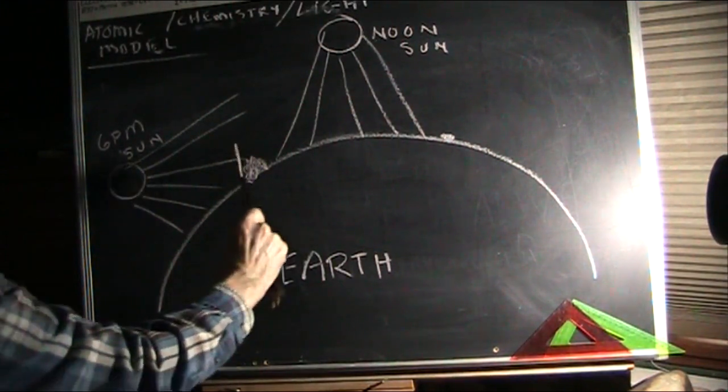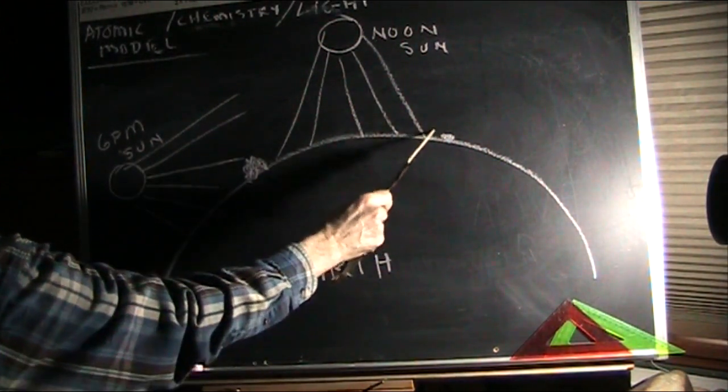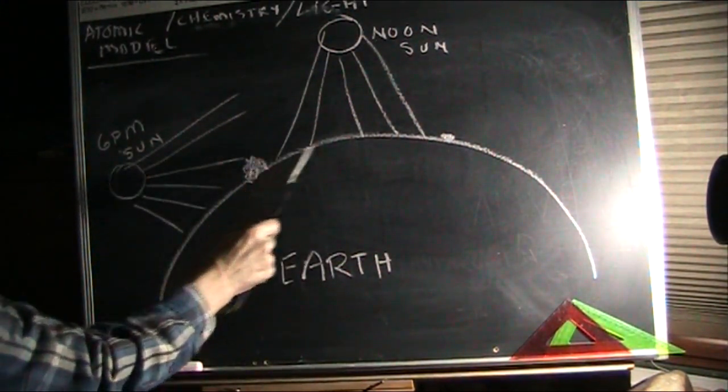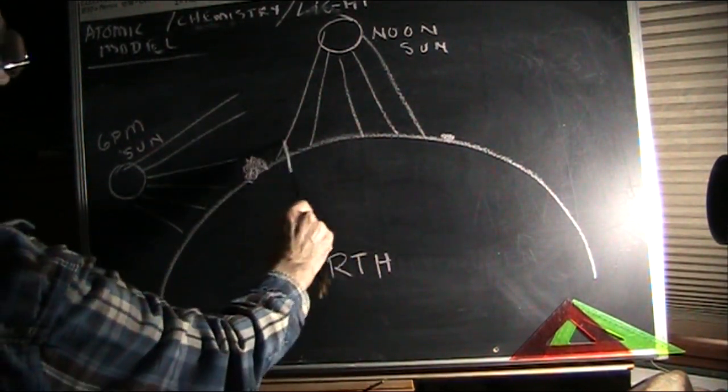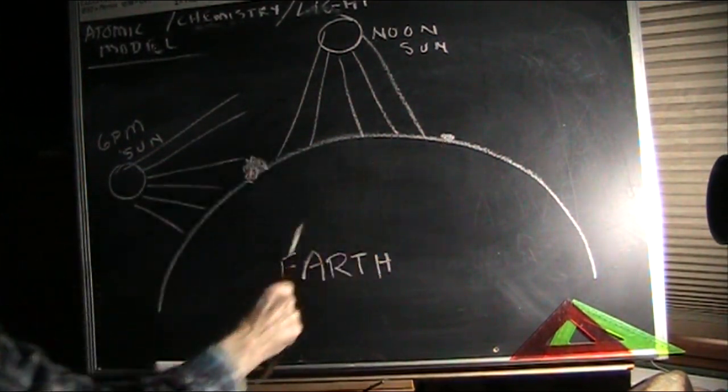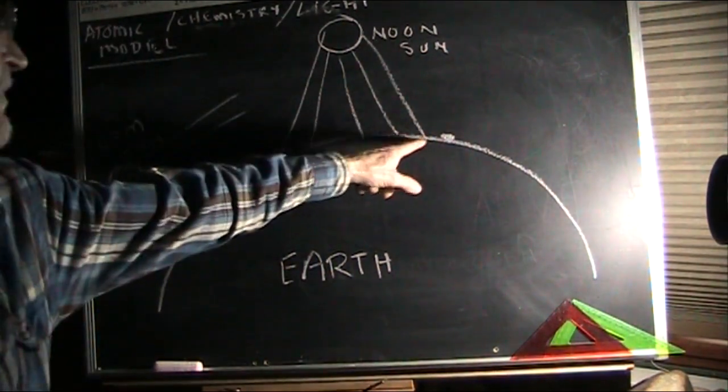That light is coming across here and bending over so he can see it. That's why he looks straight across. What he's seeing is this light bending over to him. Not across flat like this.